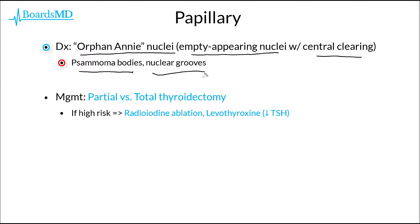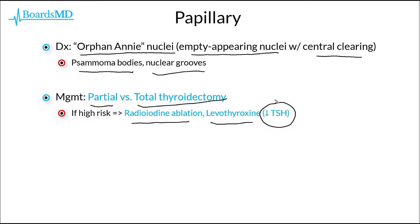Much like our other types of thyroid cancers, the hallmark of management in papillary cancer of the thyroid is going to be either a partial or total thyroidectomy. Additionally, for high-risk patients, we can supplement surgery with radioiodine ablation, as well as giving levothyroxine in order to suppress the patient's TSH. This decreases TSH stimulation of the thyroid, increasing our chances of eliminating this tumor, since we do not want continued TSH stimulation of the very tissue we are trying to get rid of.